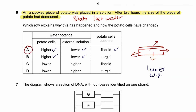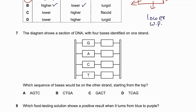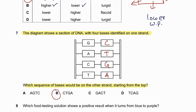Question number seven: the diagram shows a section of DNA with four bases identified on one strand. Which sequence of bases would be on the other strand, starting from the top? G pairs with C, A pairs with T. So C, T, G, A is the correct sequence — 7B is the answer.